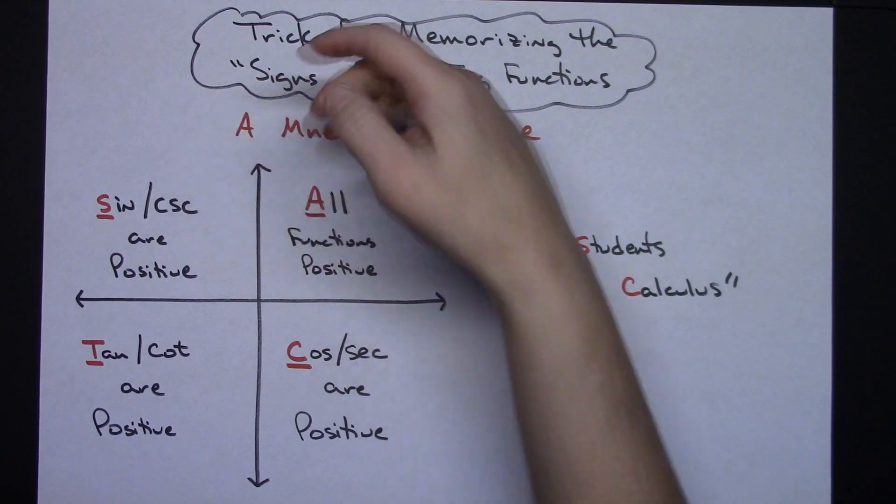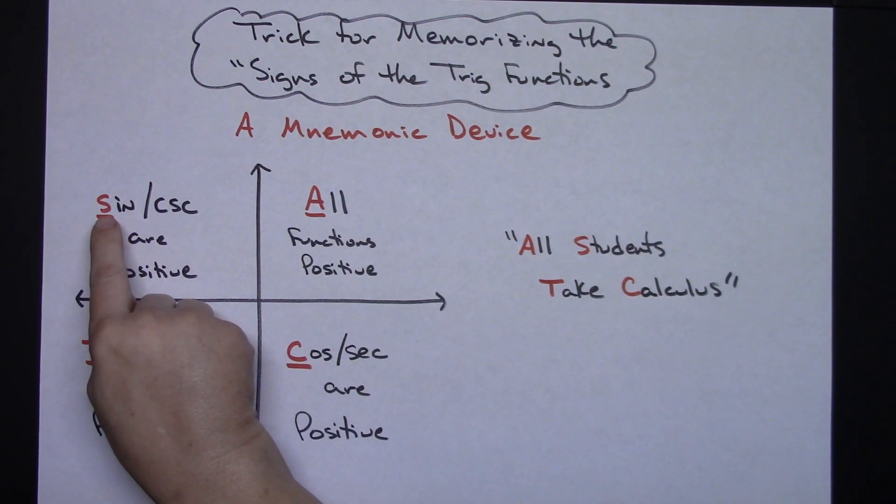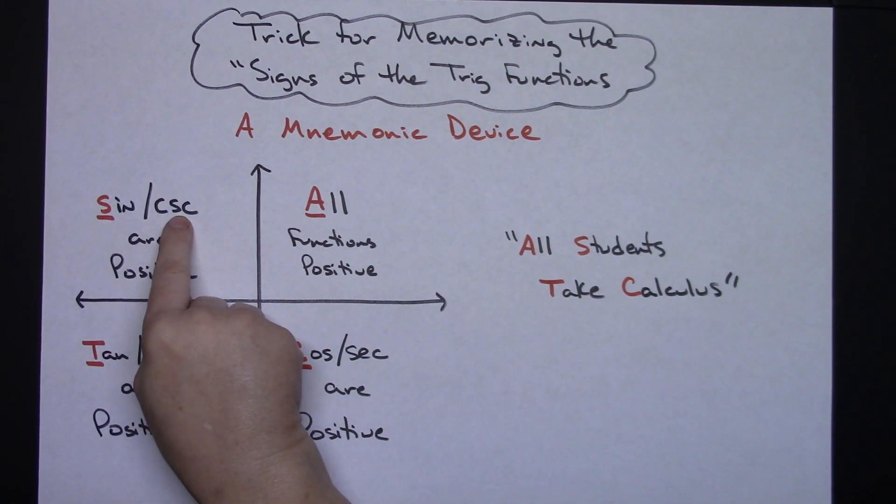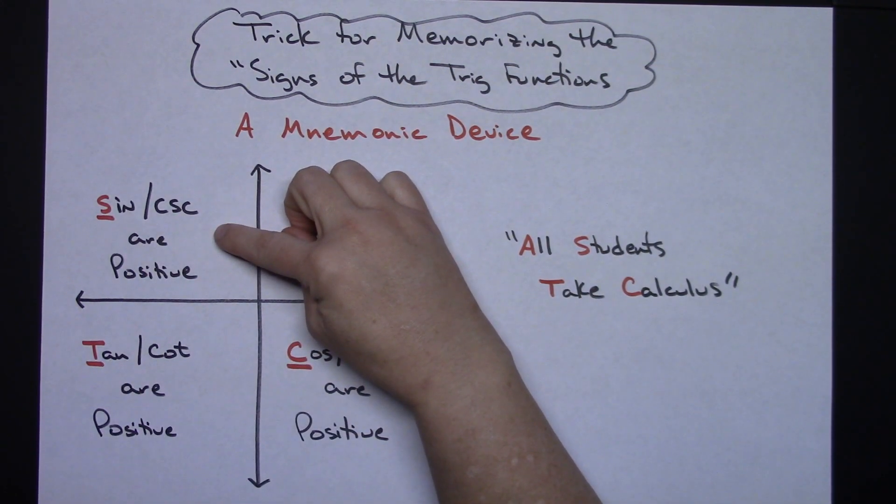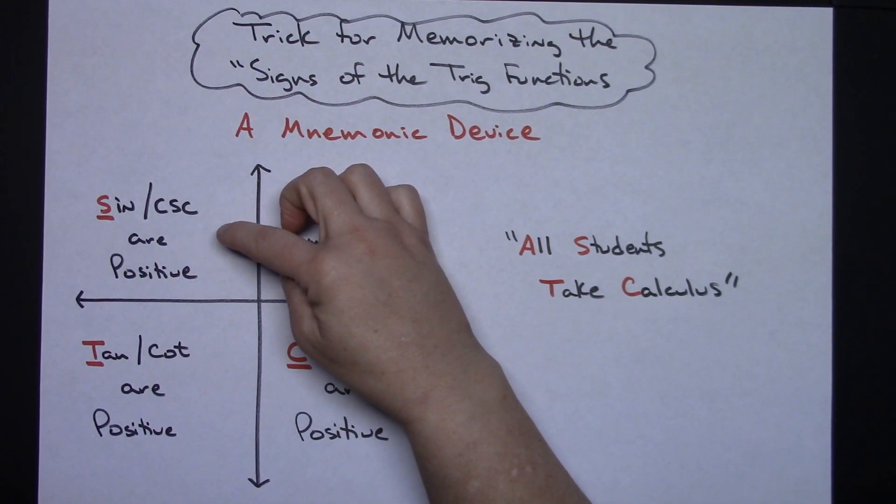The sine corresponds kind of to me. I think sine and cosecant kind of go together. So you've got to remember the S here stands for sine and cosecant. And in the second quadrant, those are the only two that are positive. That means all other trig functions in the second quadrant are negative.